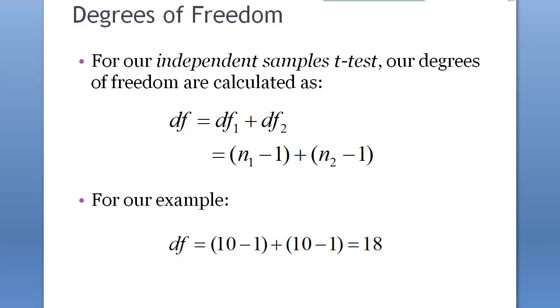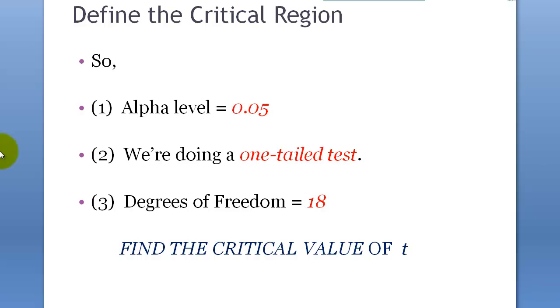The degree of freedom for this is the full degree of freedom, so combine them. Basically, we used the same numbers from the last example: 10 minus 1 plus 10 minus 1 is 18, and alpha level is 0.05, and it's one-tailed test.